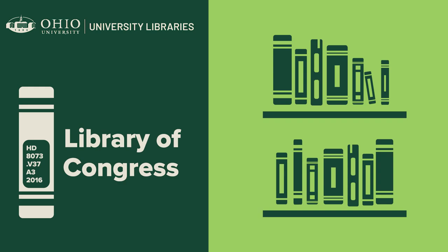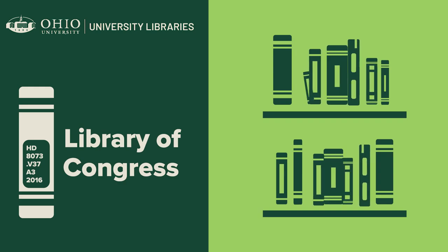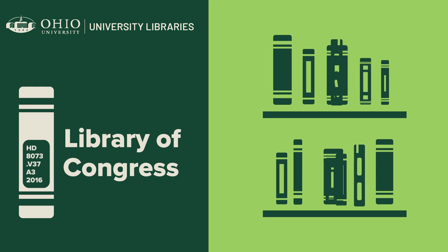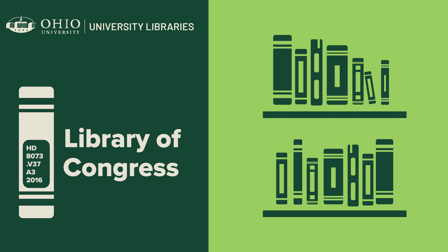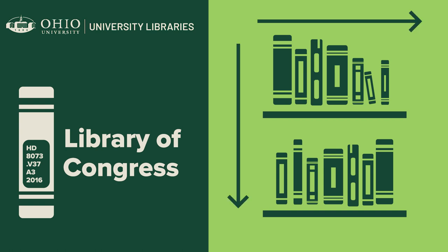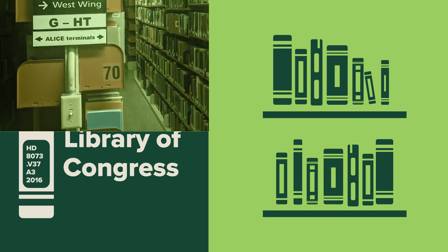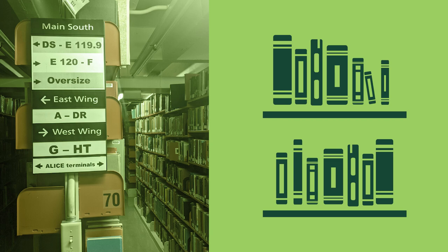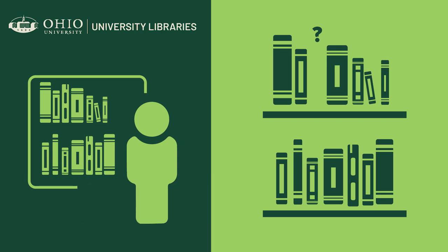Ohio University Libraries use Library of Congress call numbers, which is an alphanumeric system used to organize books. Books are arranged in order from left to right and from top to bottom on the shelves. Each row of shelving has small signs located at the end of the rows with call numbers on them. Use these signs to locate the section where your book is shelved. If you have any problems finding a book, remember library staff is here to help.